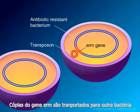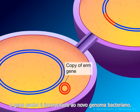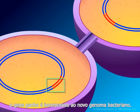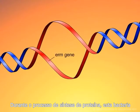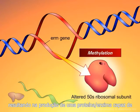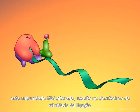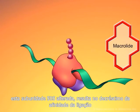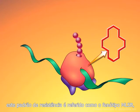Copies of the ERM gene are transported to other bacteria via plasmids or transposons through pore-like channels. The ERM gene is incorporated into the new bacterial genome. During the process of protein synthesis, this bacterium will transcribe and translate the genetic code of the ERM gene, resulting in the production of a protein enzyme capable of methylating the 50S ribosomal subunit at a specific position. This altered 50S subunit results in decreased binding affinity for macrolides and other antibiotics such as lincosamides and streptogramin type B. This pattern of resistance is referred to as the MLS phenotype.